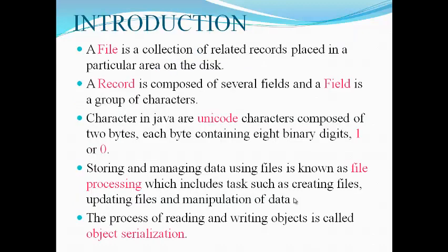Introduction. A file is a collection of related records placed in a particular area on the disk. A record is composed of several fields and a field is a group of characters. Characters in Java are Unicode characters composed of two bytes, each byte containing either binary digit 1 or 0. Storing and managing data using files is known as file processing, which includes tasks such as creating files, updating files, and manipulation of data. The process of reading and writing objects is called object serialization.